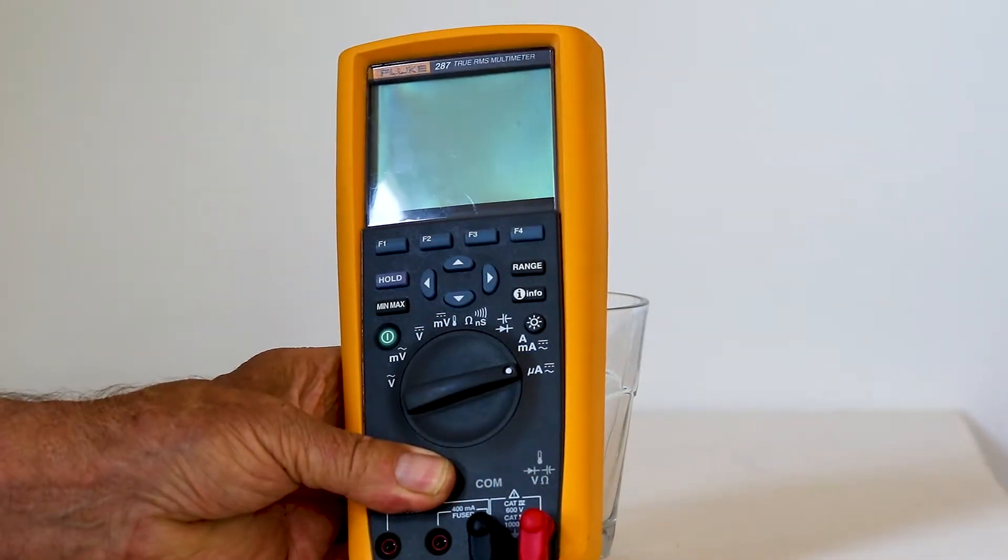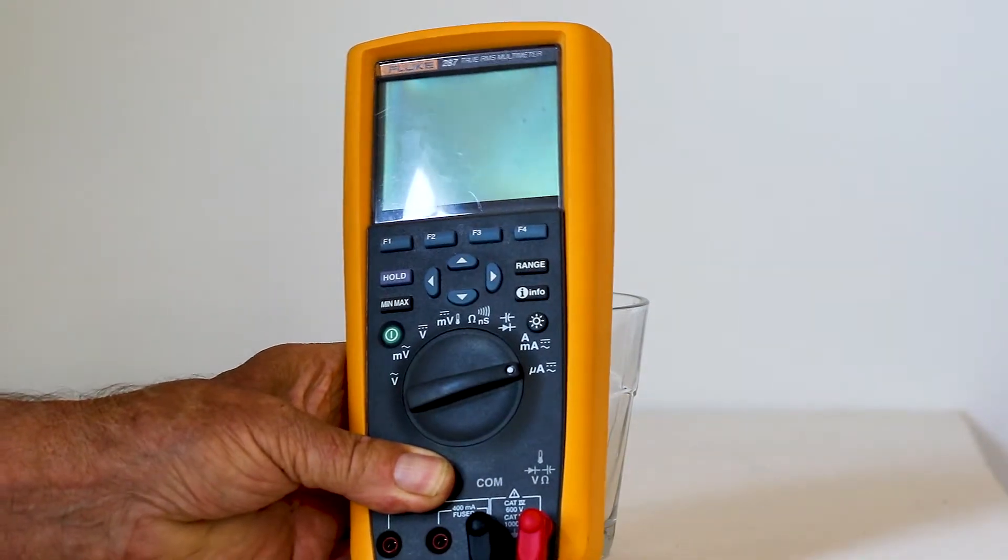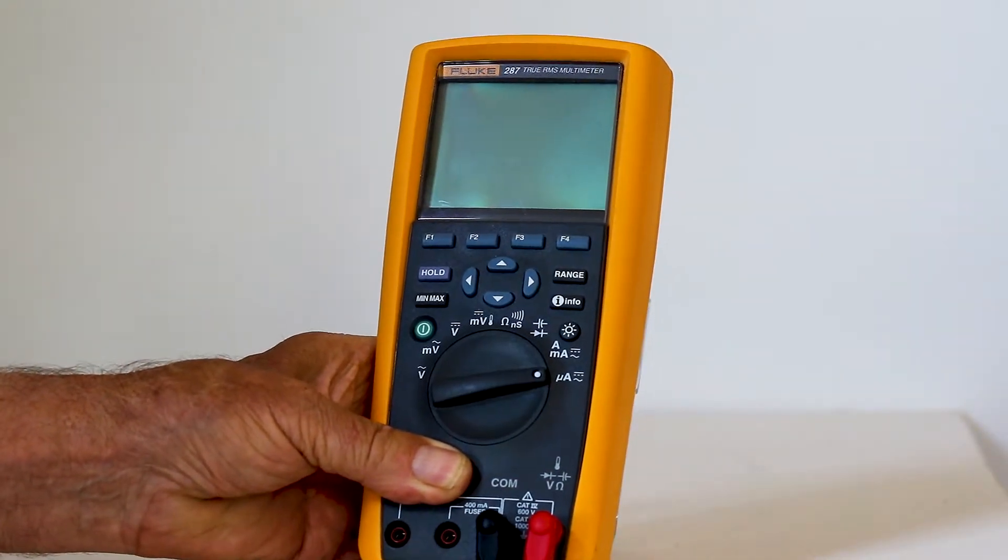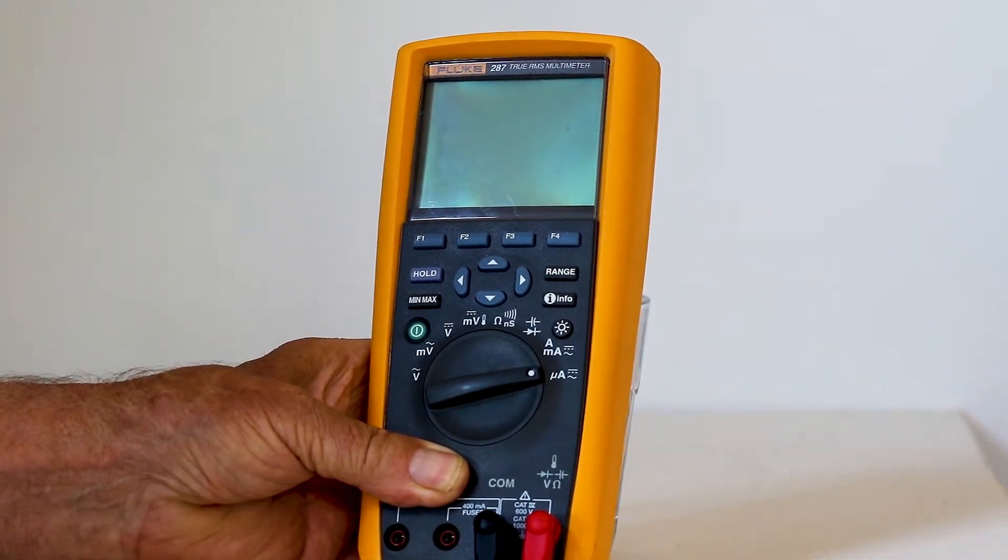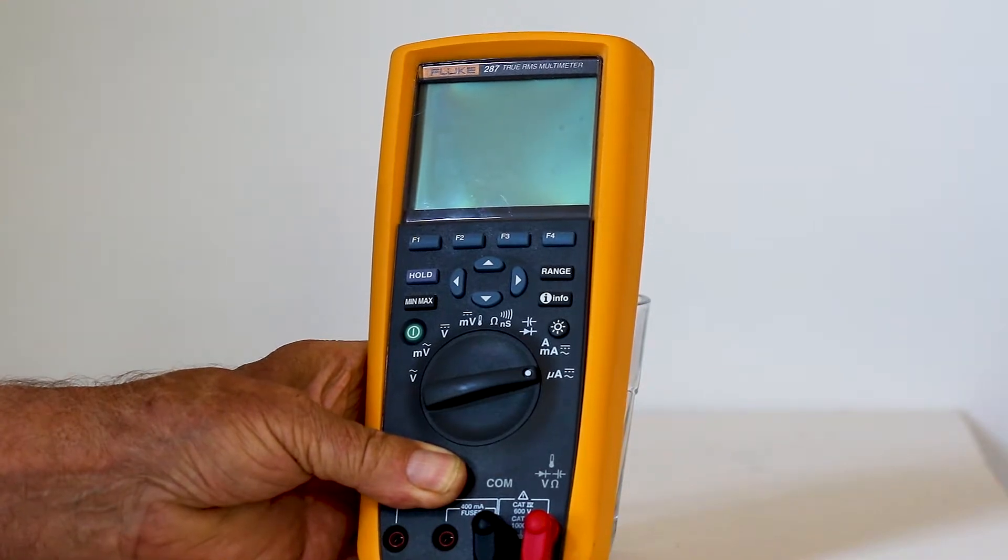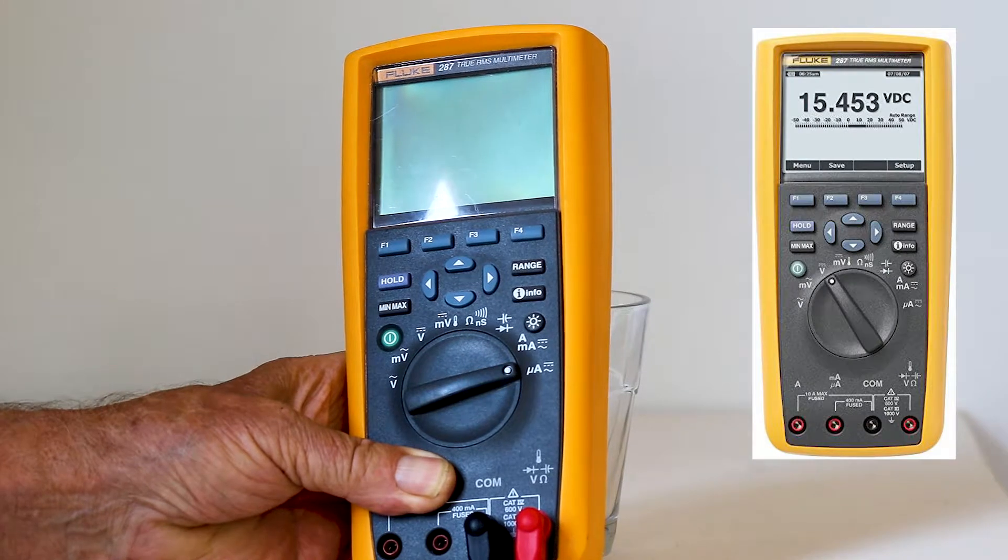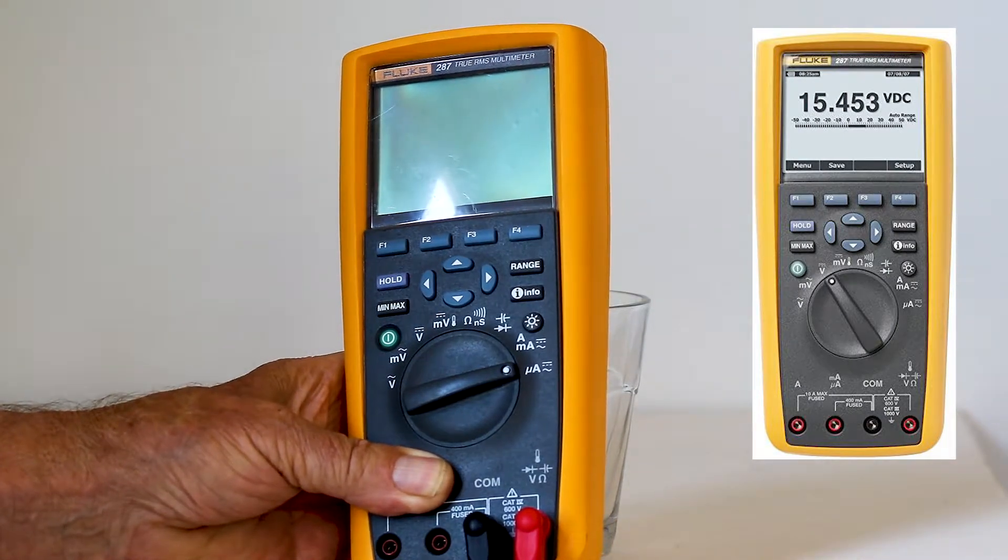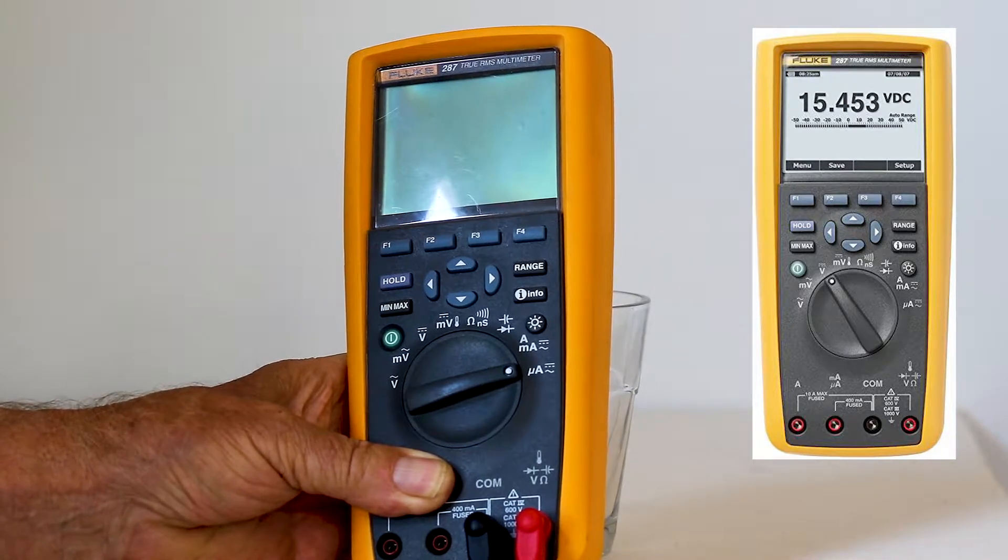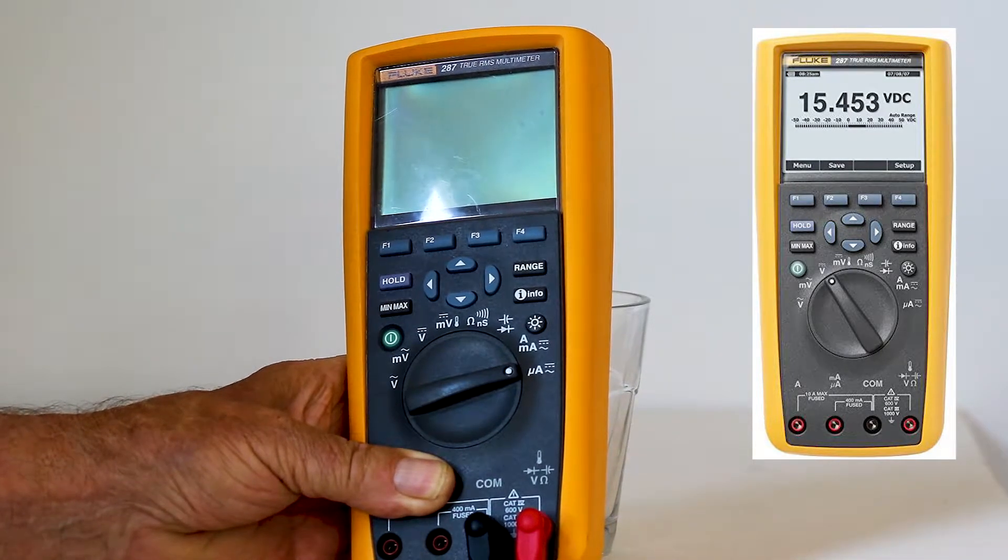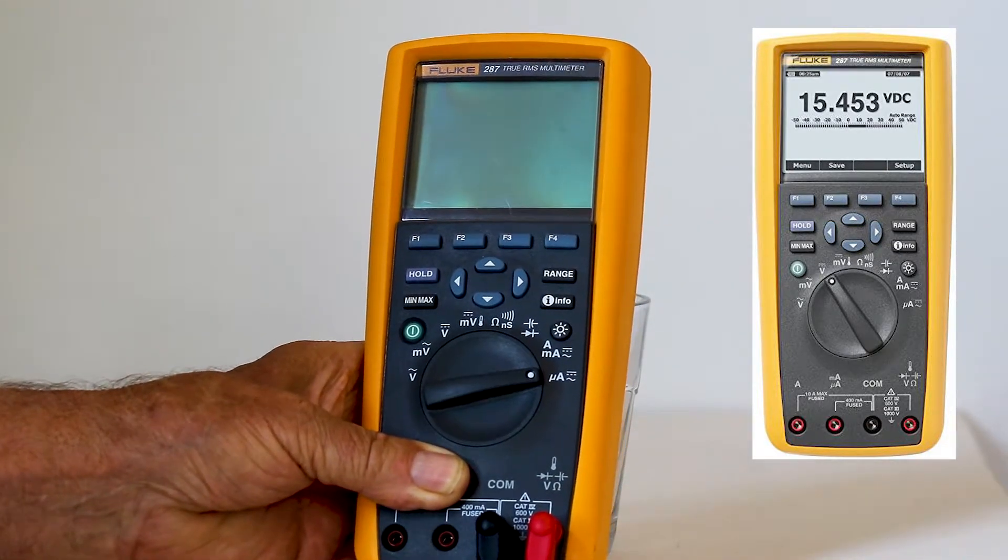The classic Fluke 287 true RMS multimeter sets the standard for all such instruments. It is equipped with a seemingly endless array of advanced features. The extraordinarily clear display and simple user-friendly interface make it a joy to use. The CAT 600 volt rating in CAT 4 locations and 1,000 volt rating in CAT 3 locations means that this meter is good for three-phase 480 volt systems.